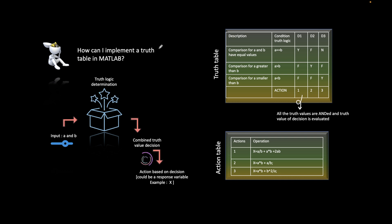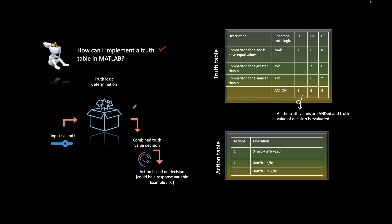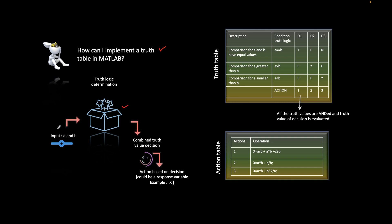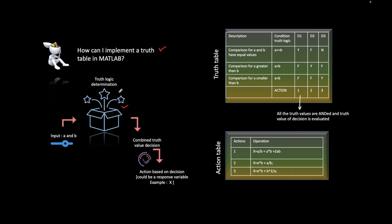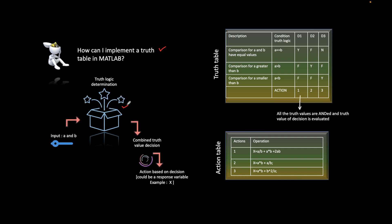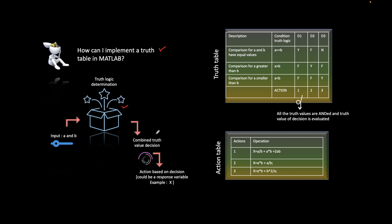The first question is: what is a truth table in MATLAB? Basically, it is a box — you can consider it as a black box — which takes some inputs. In this scenario, a and b are the two inputs you give to the truth table. Inside this box, basic logic or truth value logic is applied based on your given inputs.